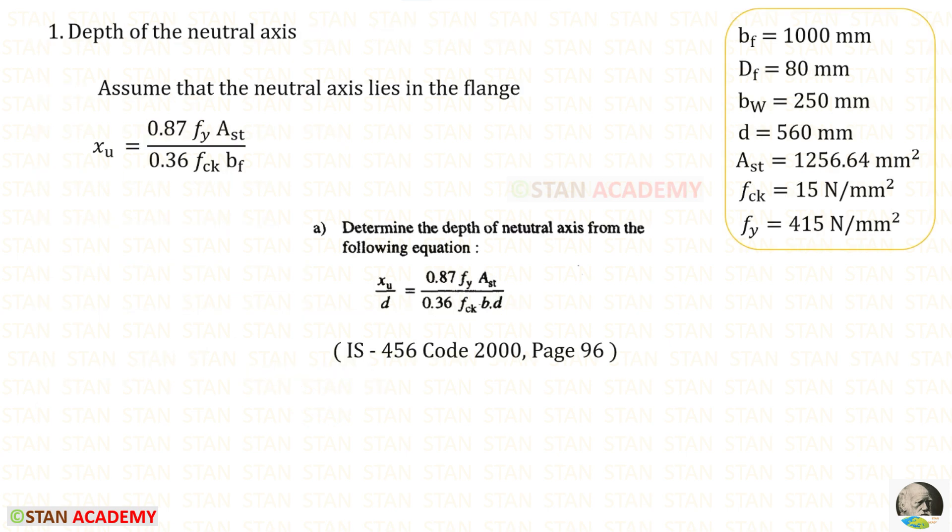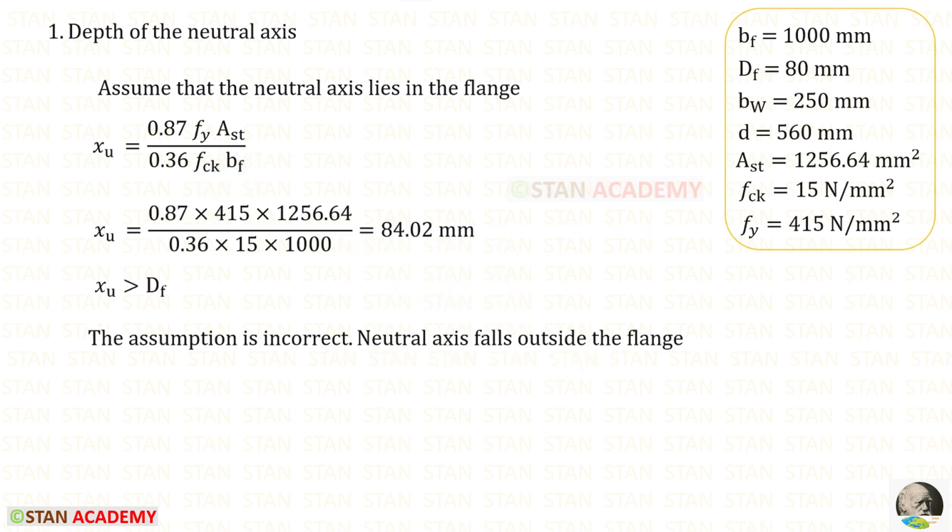The first step is to find the depth of the neutral axis. First we need to assume that the neutral axis lies in the flange. From the IS-456 codebook page number 96, we can copy this formula. In both of the denominators we can eliminate D and instead of B we have to apply Bf. For the depth of the neutral axis we will get 84.02 mm.